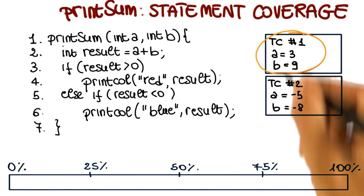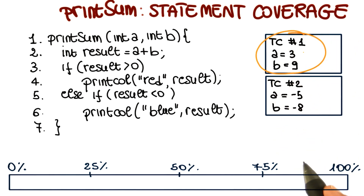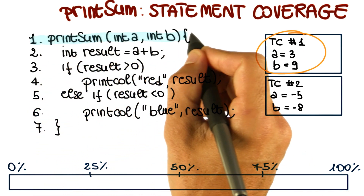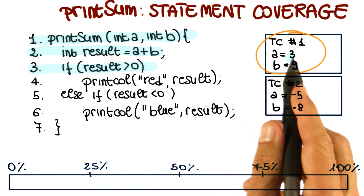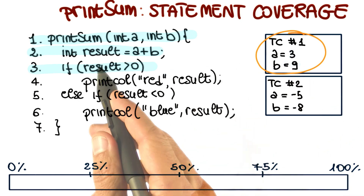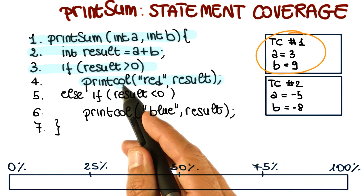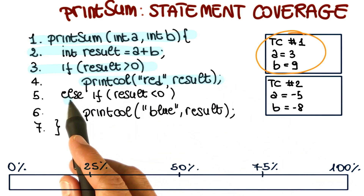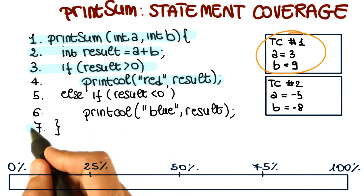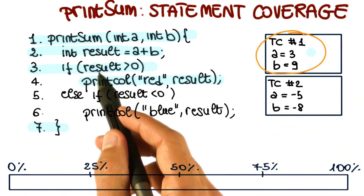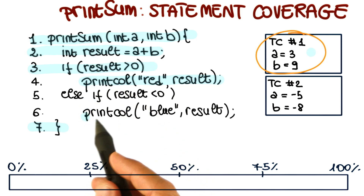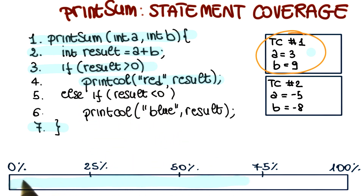When we run test case 1, I'll highlight the parts of the code that get covered. We cover the first statement, then the second statement which computes the result. We reach the if statement — since the result is 12 (from inputs 3 and 9), which is greater than zero, we execute the true branch. We then jump to the final statement, skipping the else branch. At the end, we covered 5 statements out of 7, which is roughly 71% coverage.